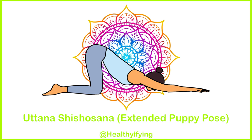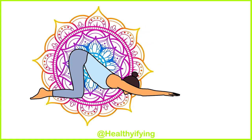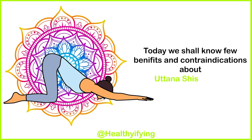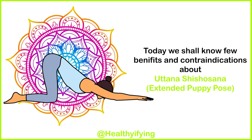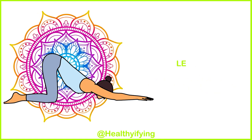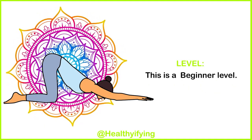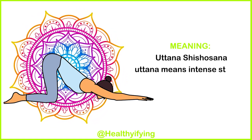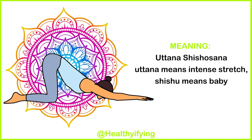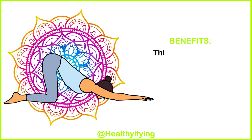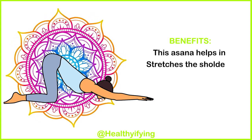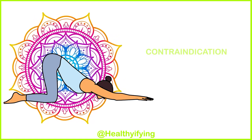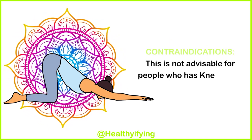Uttana Shishosana – Extended Puppy Pose. Today we shall know a few benefits and contraindications about Uttana Shishosana, Extended Puppy Pose. This is a beginner level pose. 'Uttana' means intense stretch, 'Shishu' means baby. Benefits: this asana helps in stretching the shoulders and spine. Contraindications: not advisable for people who have knee injury.